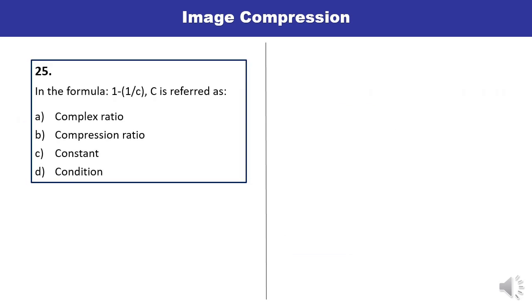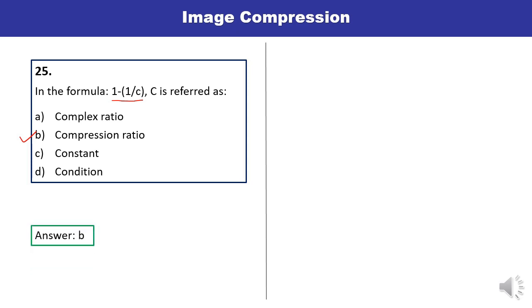Question 25: A formula is given as 1 minus 1 upon C. Here, what do you mean by C? C is actually the compression ratio. You can mark this option very quickly. This is the correct answer.